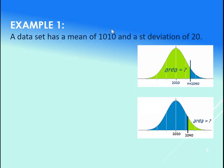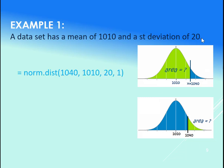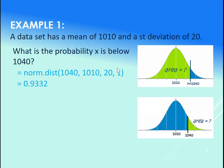Let's say we had a mean of 1000, a standard deviation of 20, and in the first case here we wanted to calculate the probability that x is below 1040. So we use our norm.dist and we put in the x value and then we put in the mean and then we put in the standard deviation.